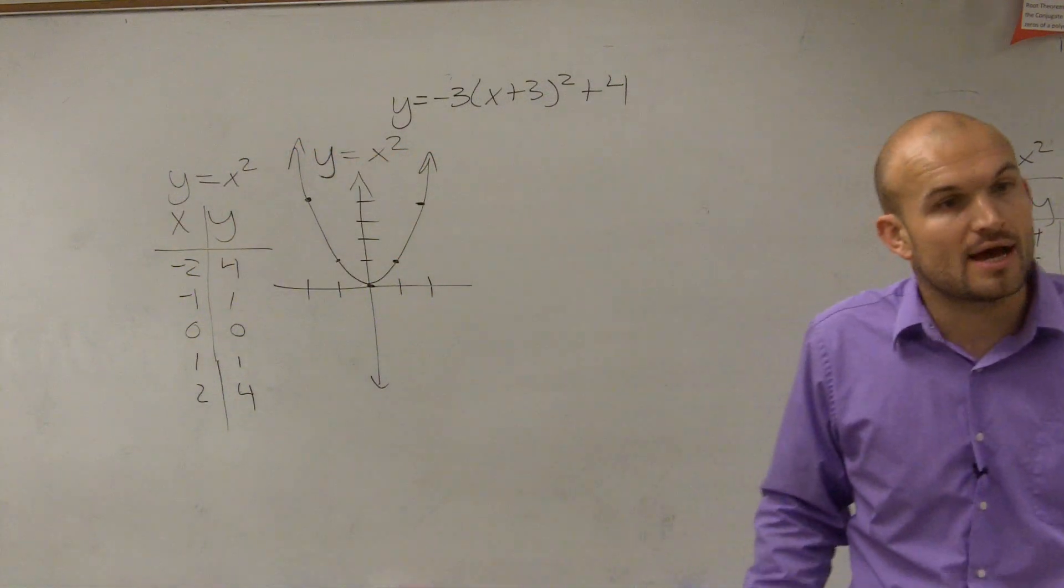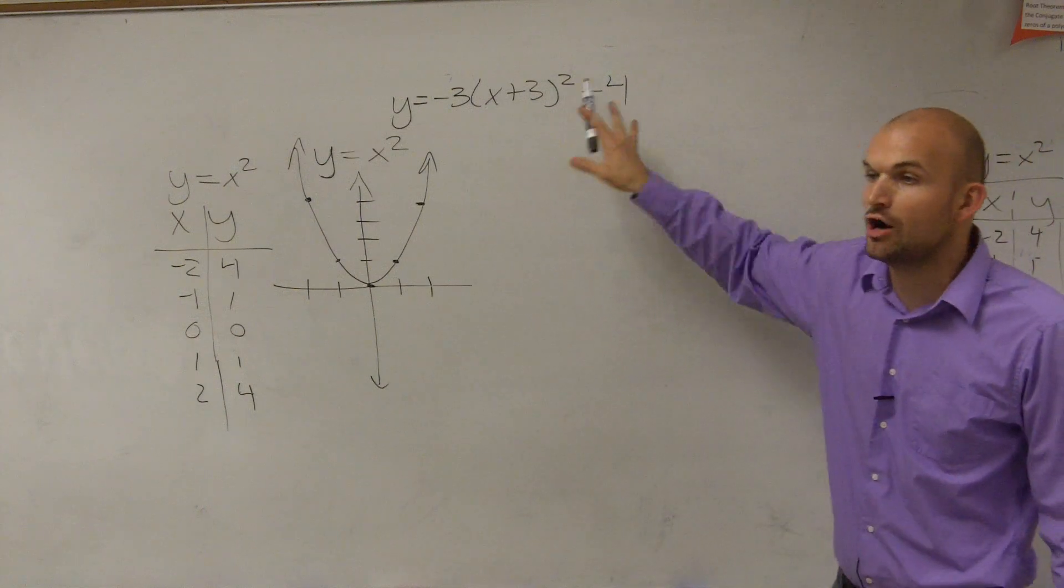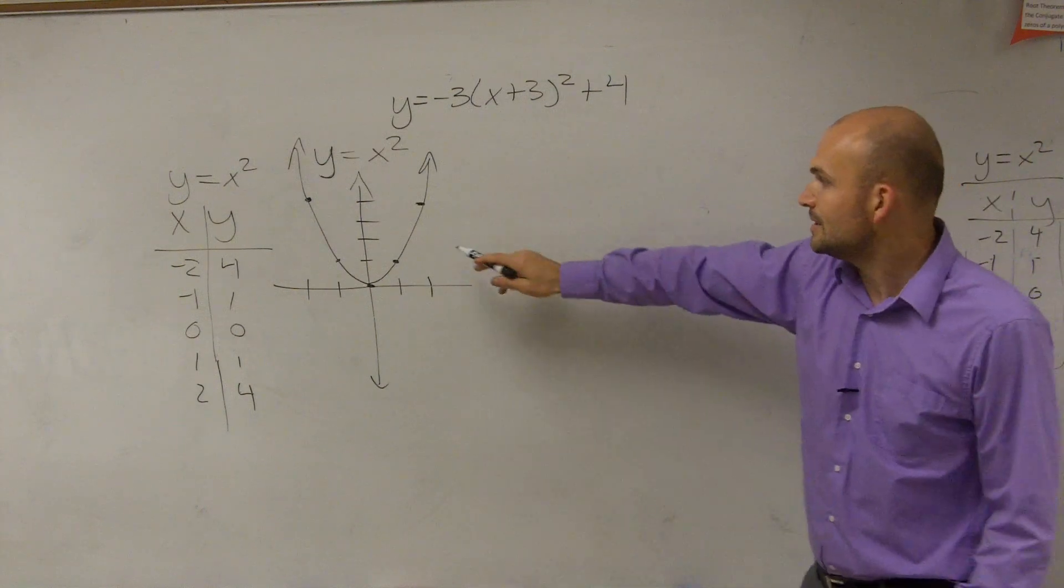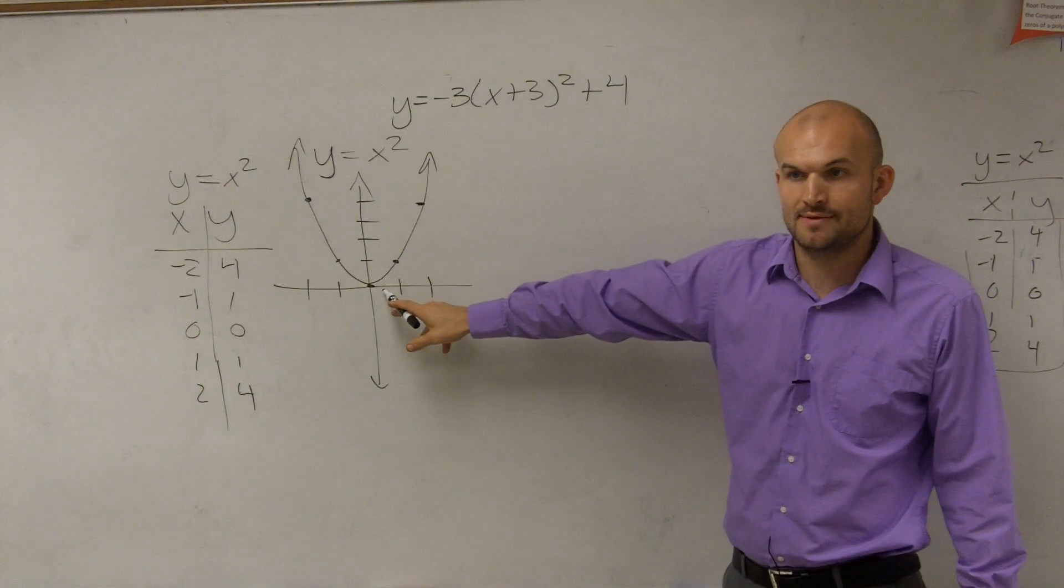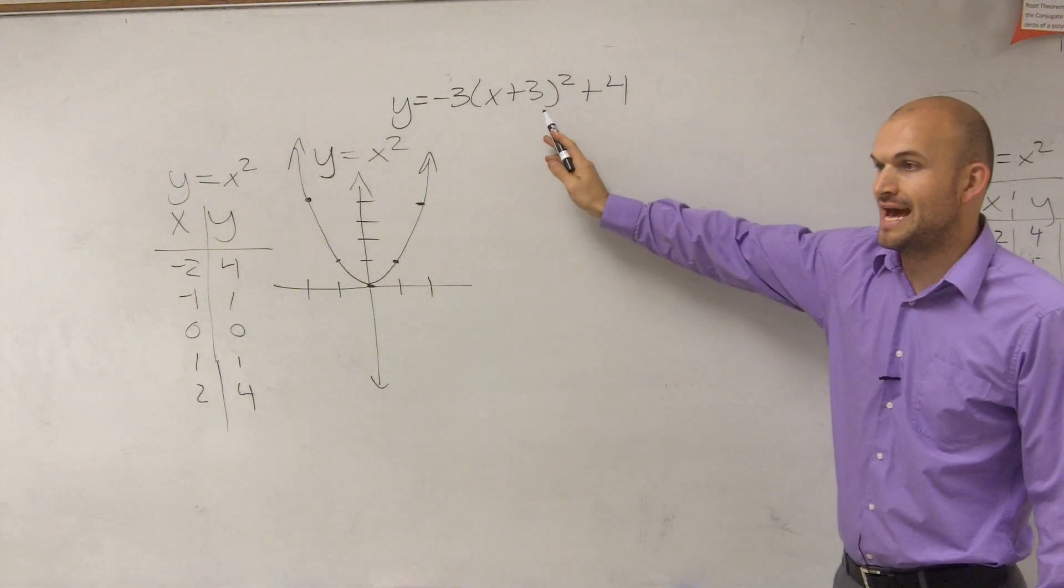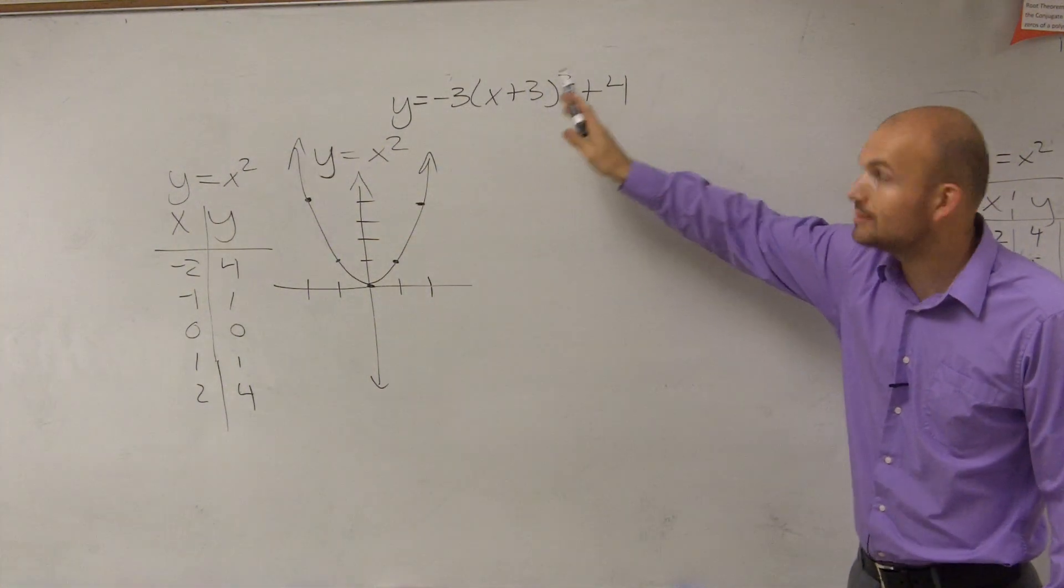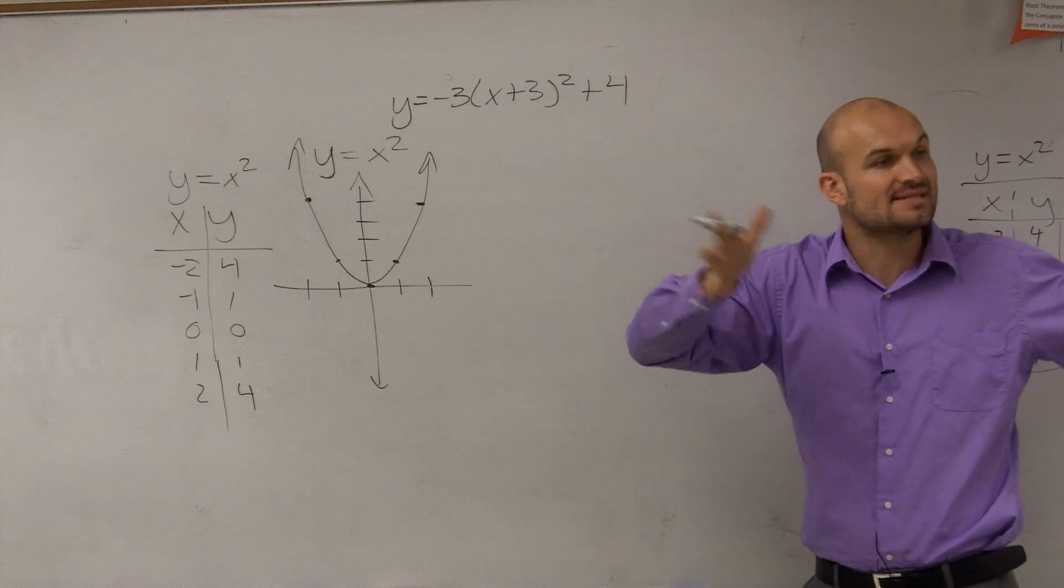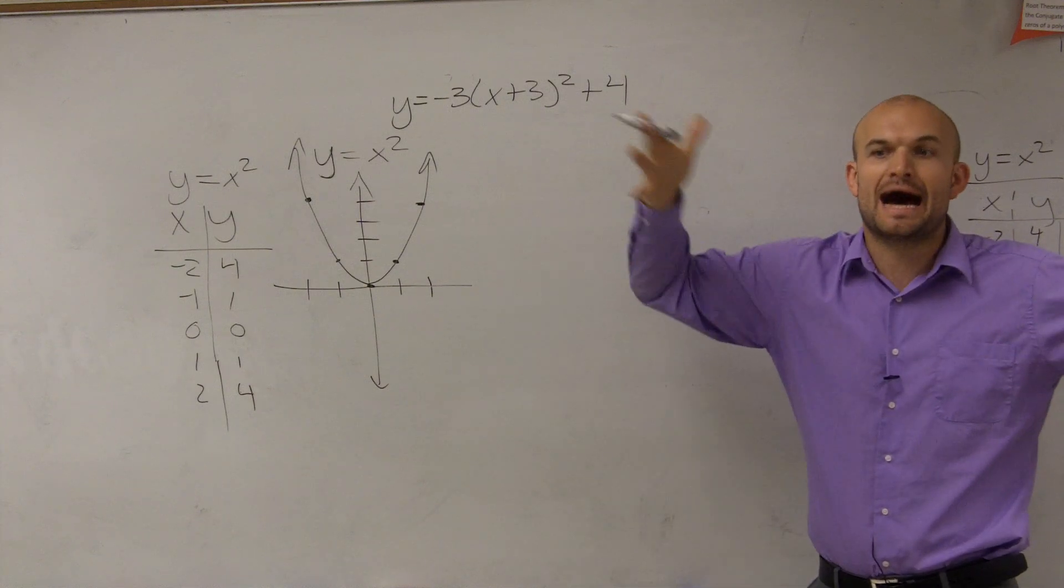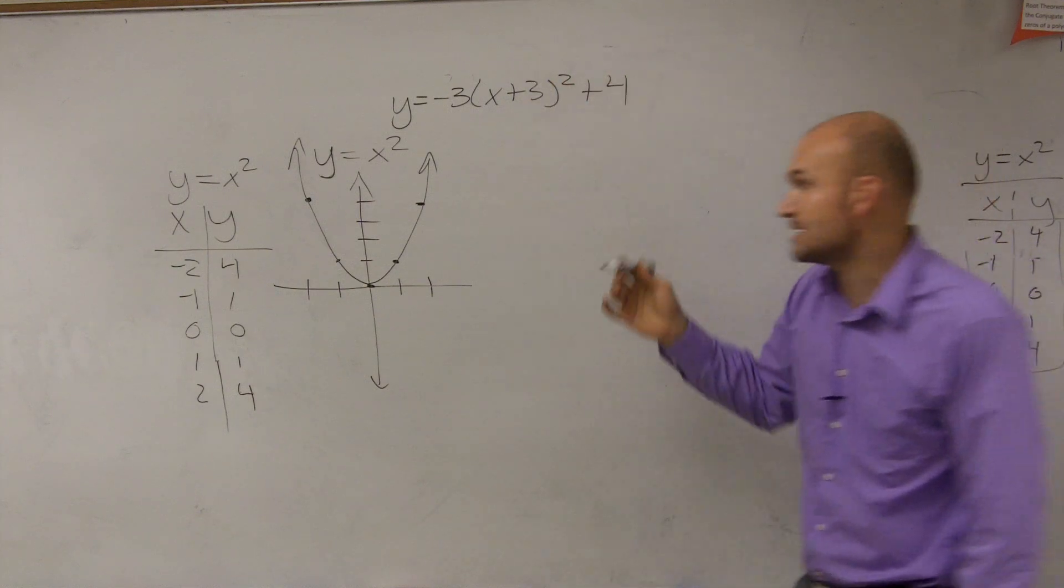So now let's just look at what transformations are in our function. Here, my vertex is at 0, 0, right? Now my vertex is at negative 3, 4. Remember, the function is x opposite of h, so you've got to take the opposite of your h value when finding the vertex.